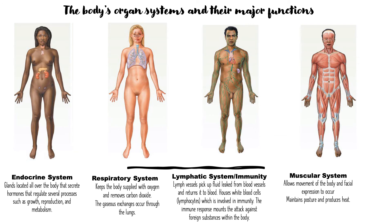The endocrine system — think hormones. Glands are distributed all over the body and secrete hormones that help regulate several processes such as growth, reproduction, and metabolism. The respiratory system's main job is to keep the body supplied with oxygen and remove carbon dioxide. Gas exchange occurs through the lungs, which are the main organ of the respiratory system.